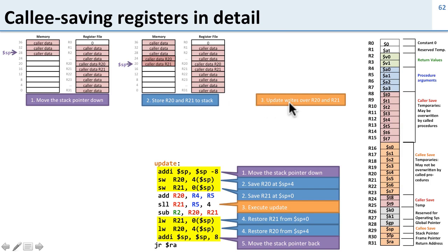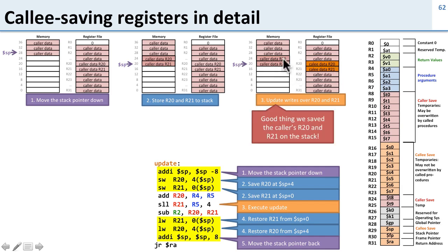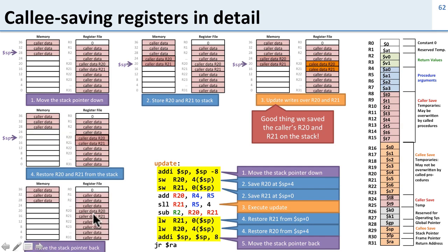Now we go ahead and run update, which writes over registers 20 and 21 — the callee has now overwritten the data that was in the register file. But it's a good thing we saved those values onto the stack. When we're done with the callee, we restore registers 20 and 21 from the stack back into the register file, then move the stack pointer back to where it was. Now both the register file and the stack are exactly the same as they were before we called the procedure. The procedure returns its result in register 2, so we get the data back in register 2.